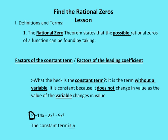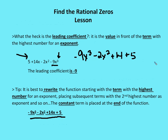What is a leading coefficient? The leading coefficient is the coefficient in front of the term with the highest exponent. The highest exponent in this polynomial is 3, and the coefficient in front of that variable is negative 9. So the leading coefficient is negative 9.